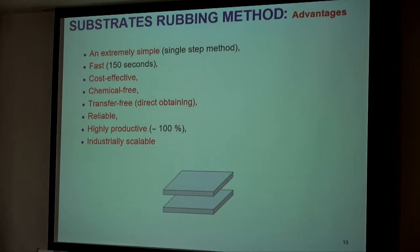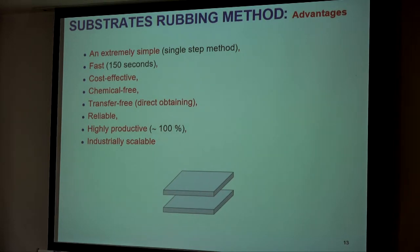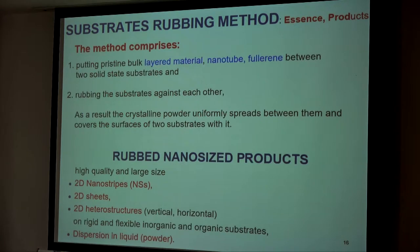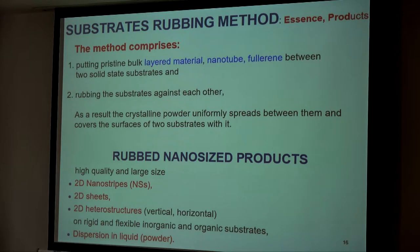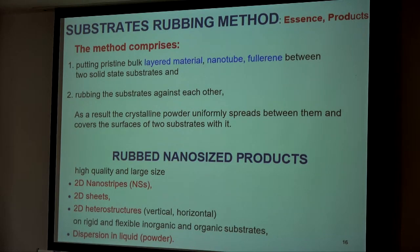The method is fast — 150 seconds — cost-effective, chemical-free, and transfer-free. We can get graphene on any substrate, and it is reliable and highly productive — 100% — as well as industry scalable. The method comprises putting pristine bulk layered material, also nanotubes or fullerenes, between two solid substrates and rubbing the substrates against each other. After 150 seconds, we will have graphene on it.